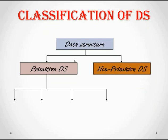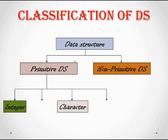Primitive data structures are classified into four types. The first one is integer, which is normally used to represent numeric data. The second one is character, which stores a single character — either uppercase or lowercase.